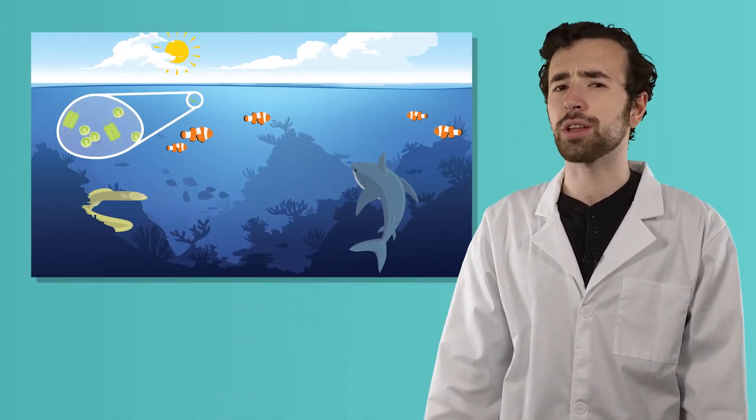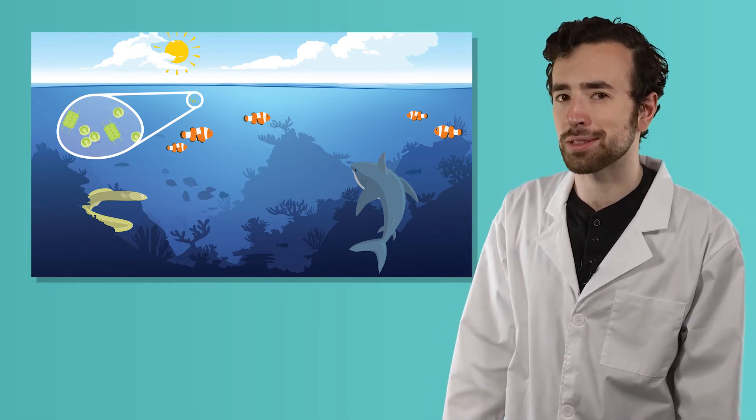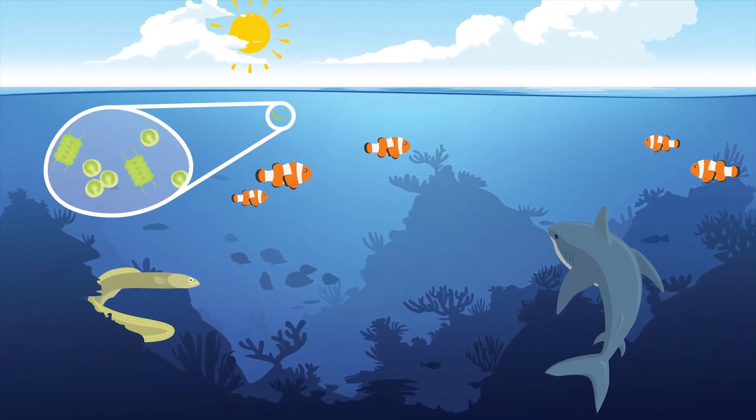So, a food chain is a model showing us one way energy flows through an ecosystem. Let's create a food chain from this marine ecosystem. Like with our last food chain, the energy in this ecosystem begins with the sun.